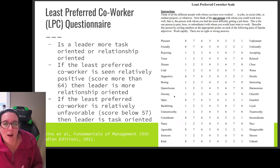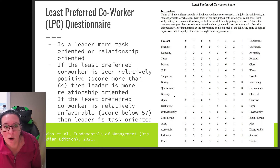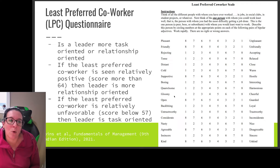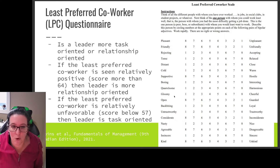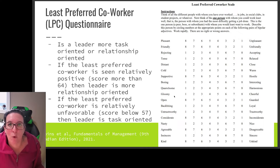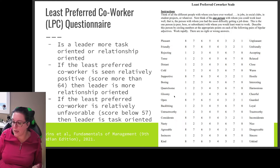Once you've answered all these questions, you total up your score. Different sources use different cutoff numbers, but we'll use the ones from the Robbins textbook. If your least preferred co-worker is seen relatively positively — so your score is more than 64 — then you as a leader are more relationship-oriented, focused on personality and relationship. If the least preferred co-worker is relatively unfavorable and your score is below 57, then you are a more task-oriented leader, meaning you focus more on their ability to perform and do their job than on their personality.